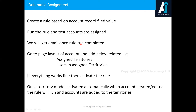For automatic assignment, here are the steps: first, you need to create your rule, then run the rule to test whether the account is properly assigned. Once rule execution completes, you will receive an email — sometimes there may be a large volume of account records to process, so it may take time. Once the rule run completes, the system admin receives an email and the accounts are assigned to their respective territories based on the criteria.